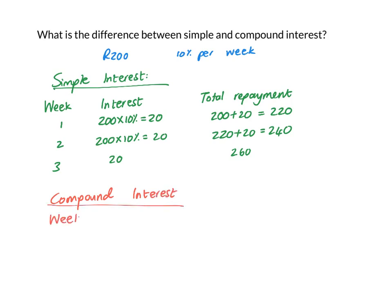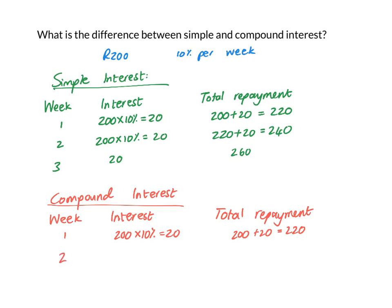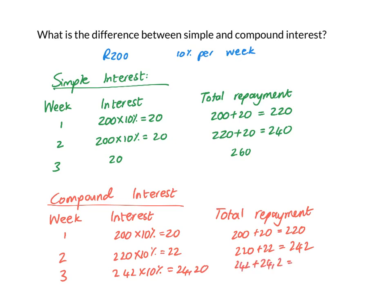Now with compound interest, you work out the interest on what is owed each time. For the first week, the interest is 200 rand times 10% = 20 rand, so total repayment is also 220 rand — the same as simple interest. But in the second week, I work out 10% of what is in the account, which is 220 rand, giving 22 rand interest. So my repayment is 220 plus 22 = 242. In the third week, interest is worked out on 242 rand, so what is owed is 266 rand and 20 cents.